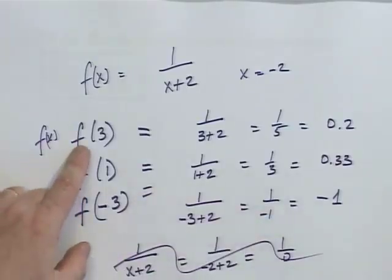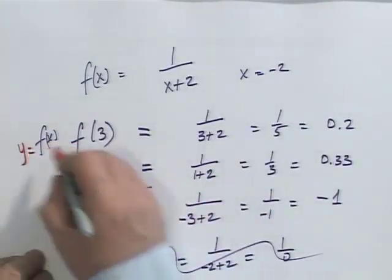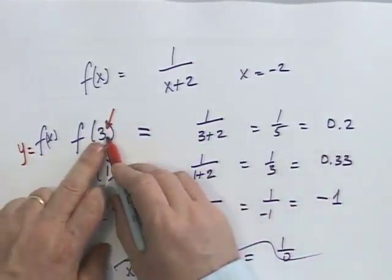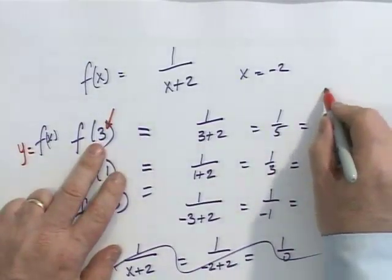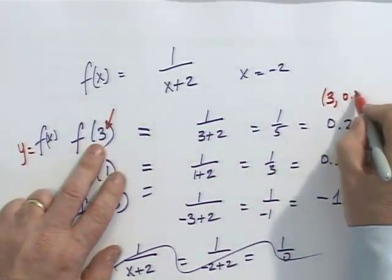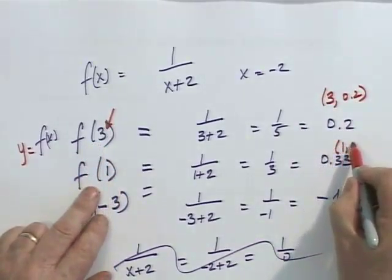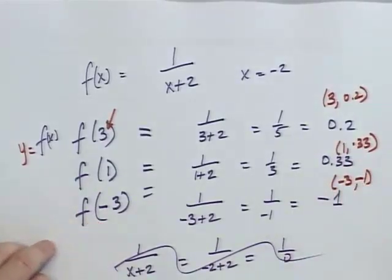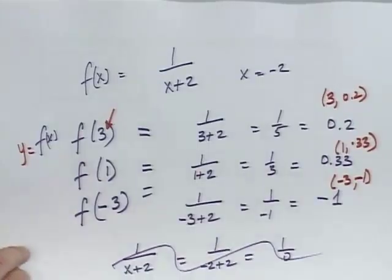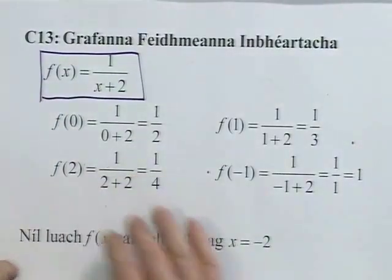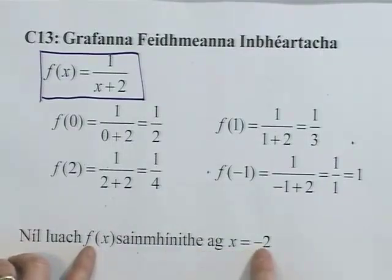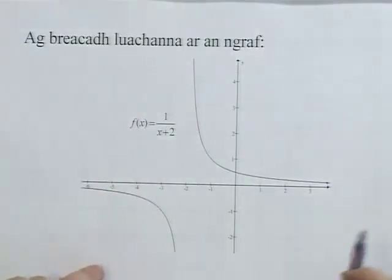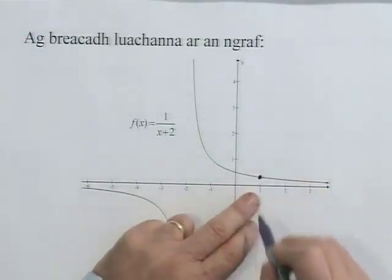Now we'll plot these points on the graph. So the points you have are (3, 0.2), then (1, 0.33), and then (-3, -1). And we'll plot these points and sketch the graph.